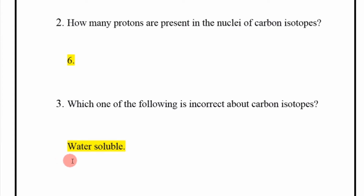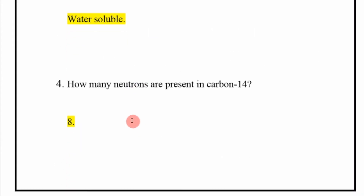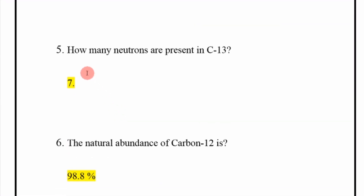Next: which one of the following is incorrect about carbon isotopes? The answer is water soluble. Next: how many neutrons are present in Carbon-14? The answer is 8.